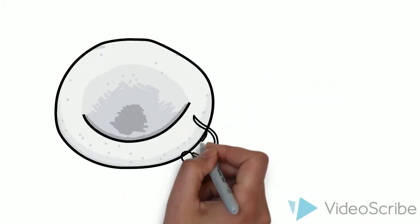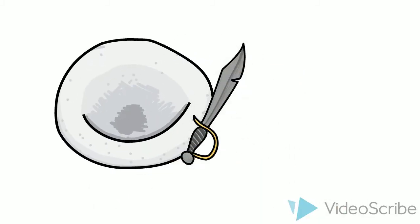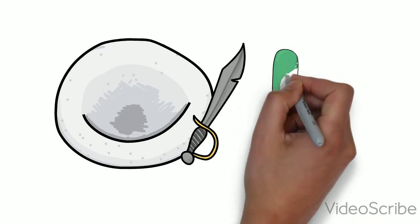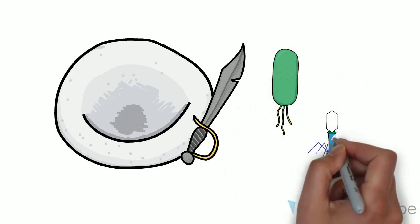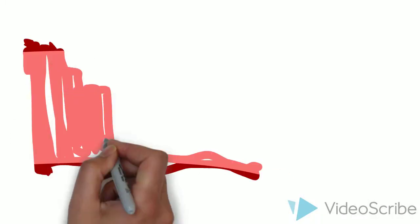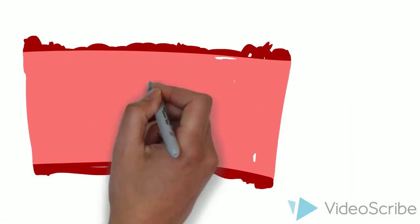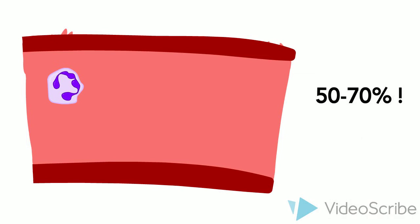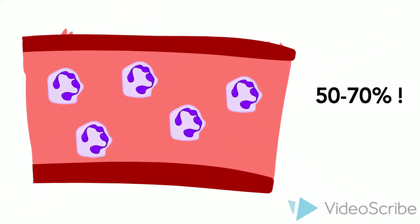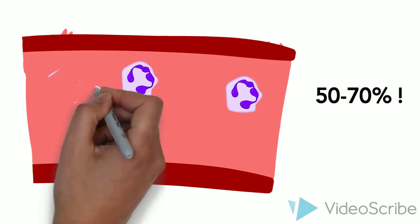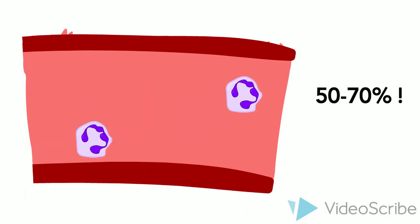The immune system is our body's natural defense system, which defends against foreign invaders such as bacteria and viruses. An important component of the immune system is the neutrophil. Neutrophils usually account for 50 to 70 percent of our white blood cells and they protect us against bacterial infections. When the neutrophil count is depleted, it is termed neutropenia.